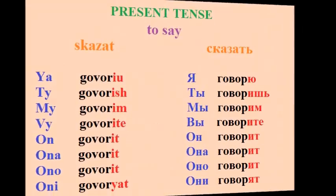The next word is сказать, or 'to say'. This word doesn't have any form in present tense — we should use the verb говорить instead. Present tense with говорить: Я говорю, ты говоришь, мы говорим, вы говорите, он говорит, она говорит, оно говорит, они говорят. In past and future tenses, сказать works normally.